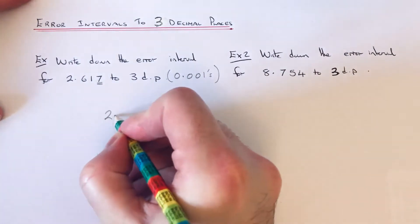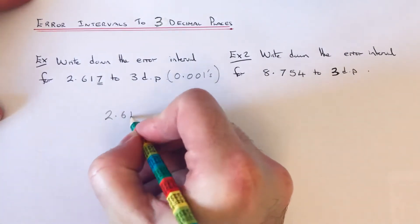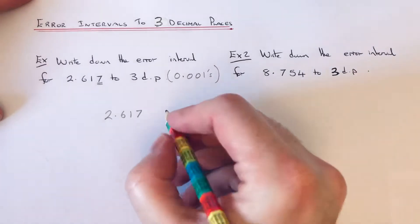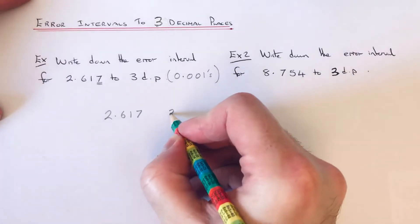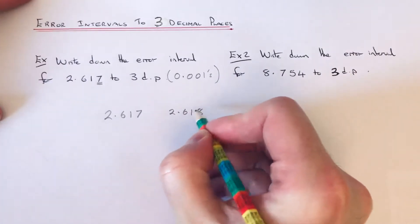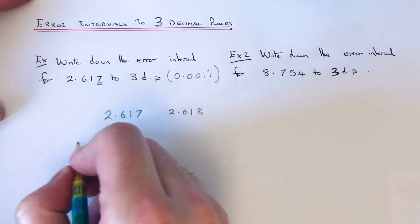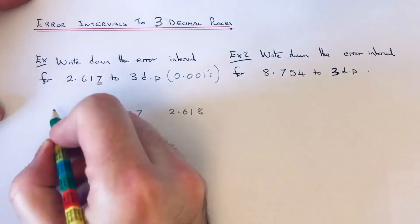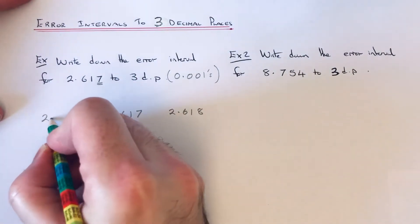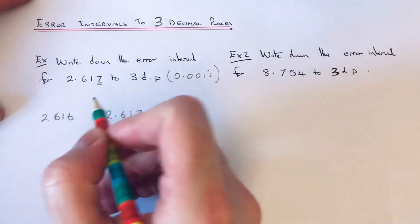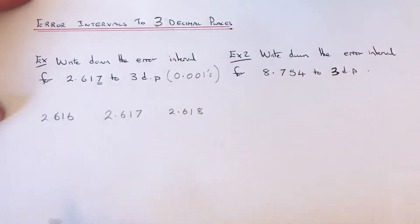So if we copy down 2.617, the number above it on our scale will be 2.618, and the number below 2.617 will be 2.616 — we just take 0.001 off.